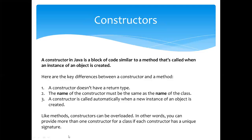Like methods, constructors can be overloaded. Similar to method overloading, we can create multiple constructors in a class and they can be overloaded. In other words, you can provide more than one constructor for a class, but each constructor must have a unique signature.